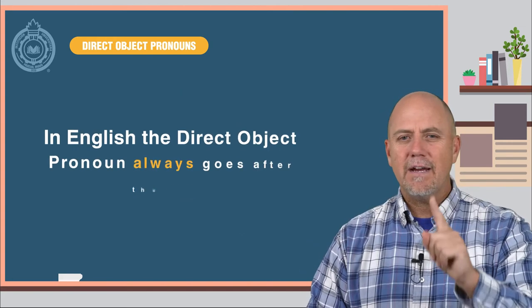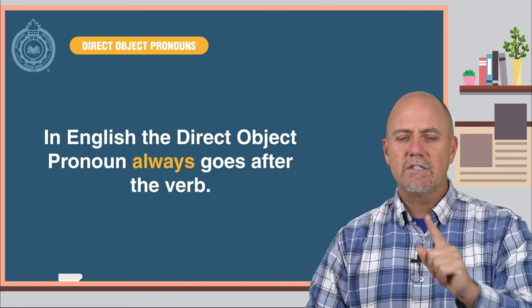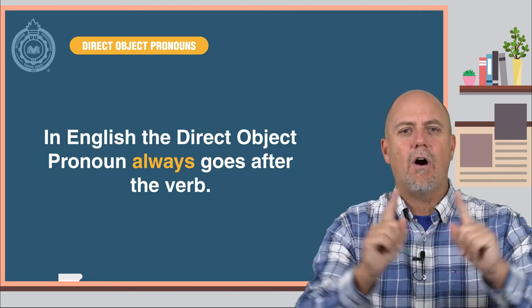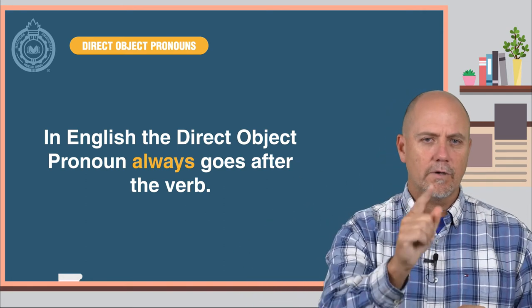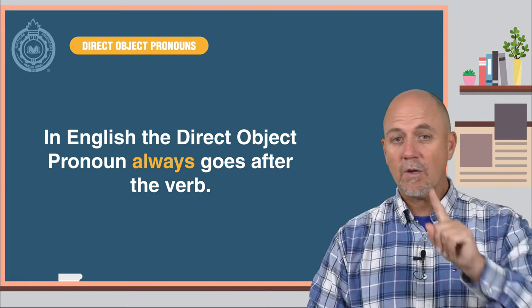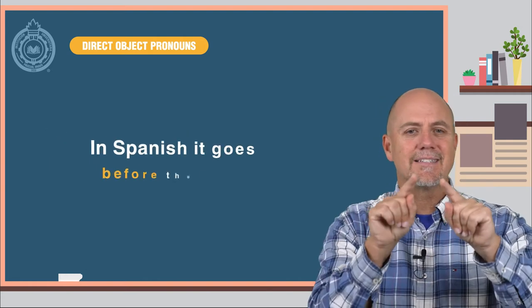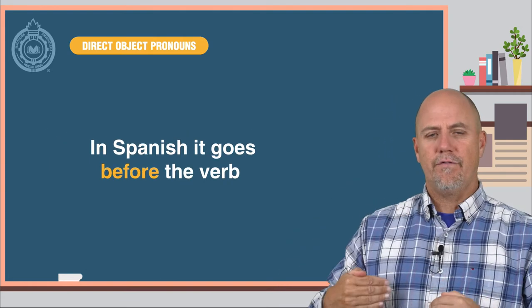This is very, very important. In English, the direct object pronouns always go after the verb. Why is that important? Because in Spanish, it goes before the verb.